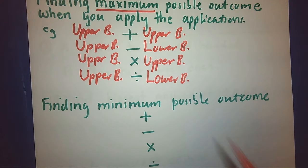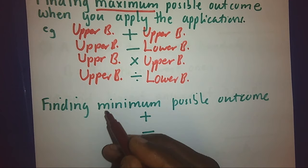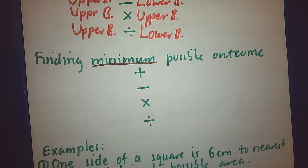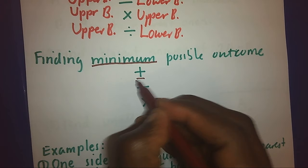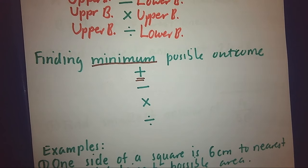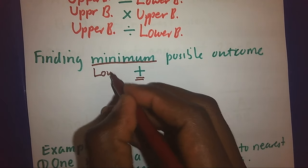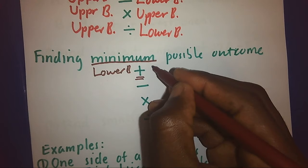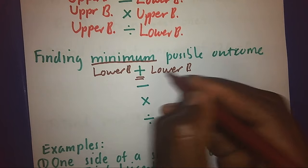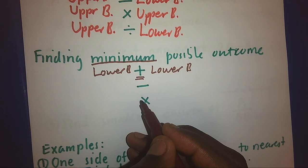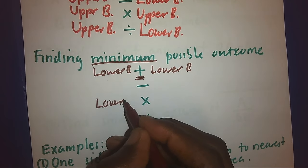But when we are finding the smallest or the minimum possible answer, this will require us to add the lower bounds, because lower bound plus lower bound gives a small answer. On the same way, if I am multiplying, I should also multiply lower bound times lower bound times lower bound.